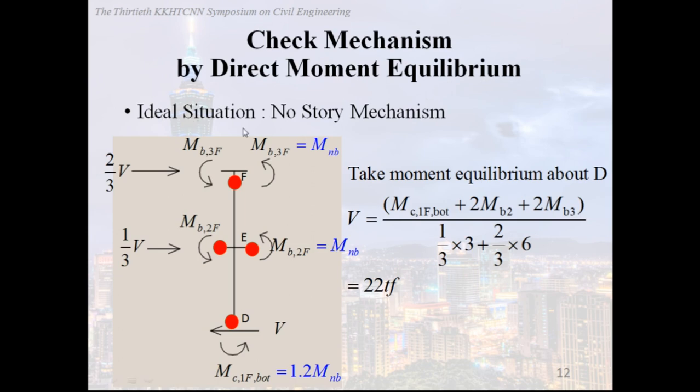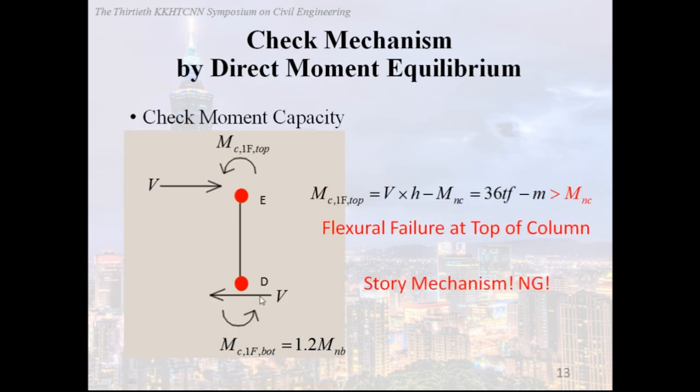So the ideal situation is no story mechanism. In here, we take out one of the frame columns as free body, and we use the direct moment equilibrium to get the best shear V by taking moment equilibrium about point D. Check moment capacity. We found that the MC flexural forward at the top larger than MNC, so it occurs flexural failure at the top of the column. So the failure mode is a story mechanism, not good. Therefore, we verify that the column flexural forward occurred story mechanism before the beam mechanism takes place.